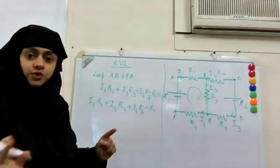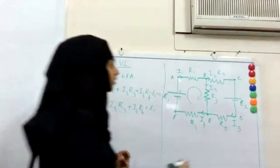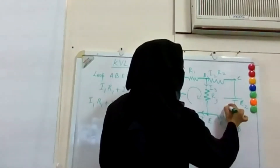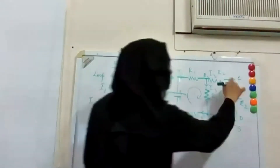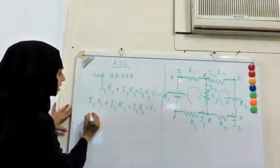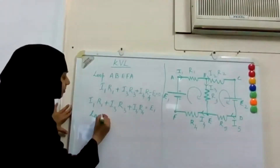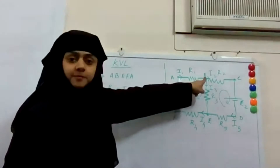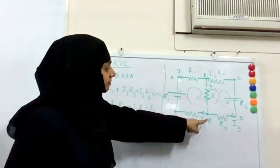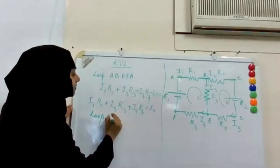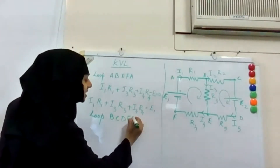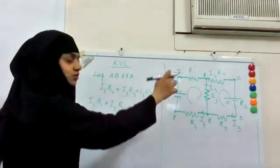Now I would like you to tell me the equation for the second loop. Can you name the loop starting from B? The loop is B, C, D, E, B.